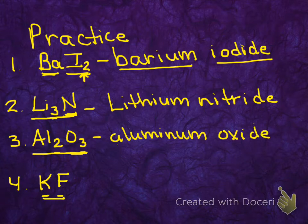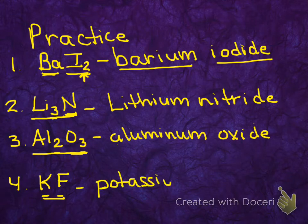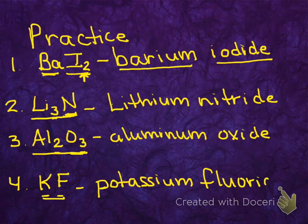Last example, KF. We know K is potassium. F is fluorine. We're going to change the ending to -ide, so we've got potassium fluoride.